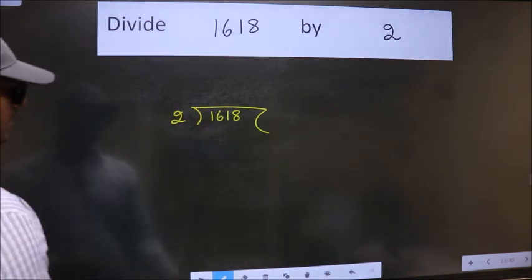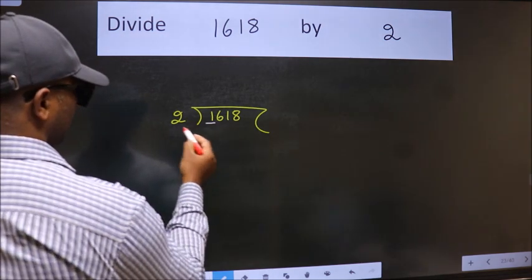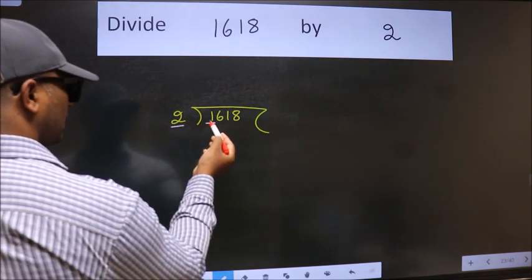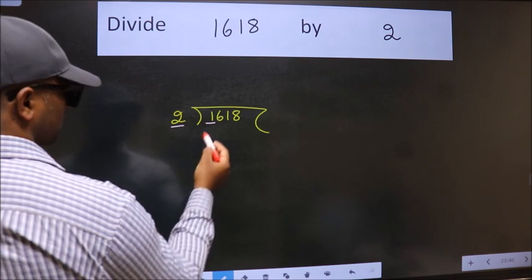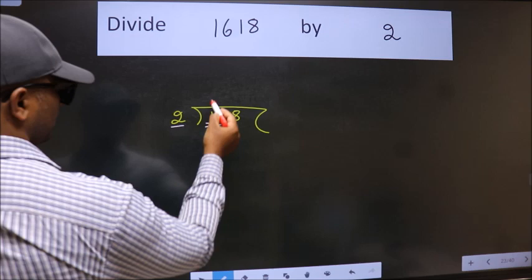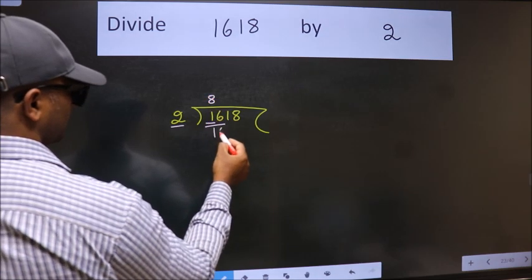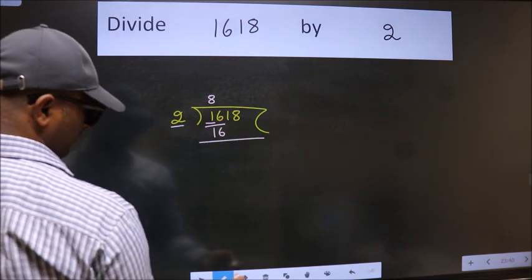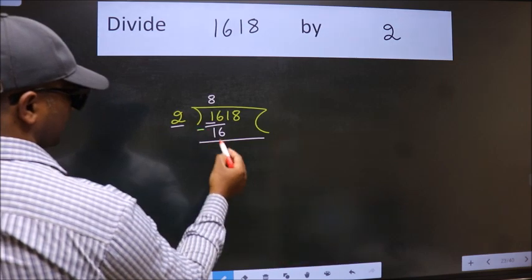Next, here we have 1 and here 2. 1 is smaller than 2, so we should take 2 numbers: 16. When do we get 16 in 2 table? 2 times 8 is 16. Now we should subtract. We get 0.